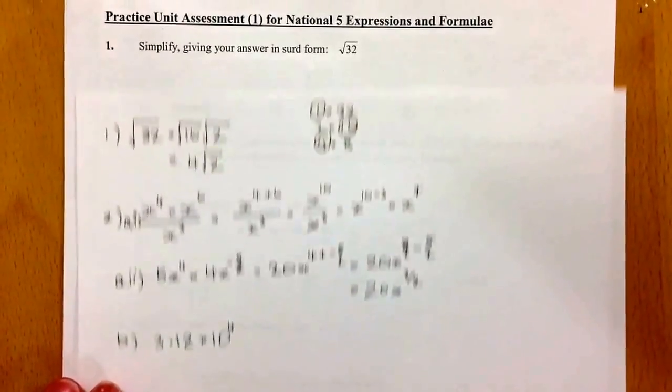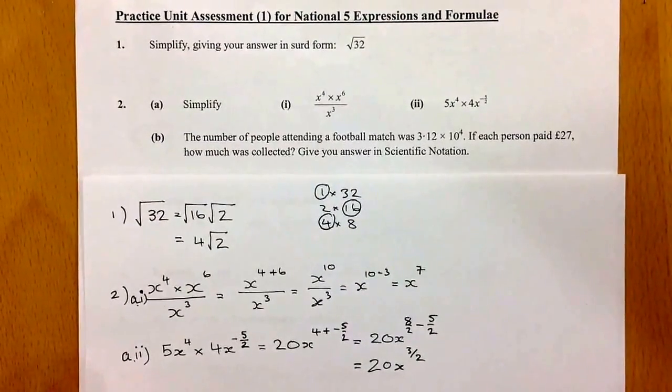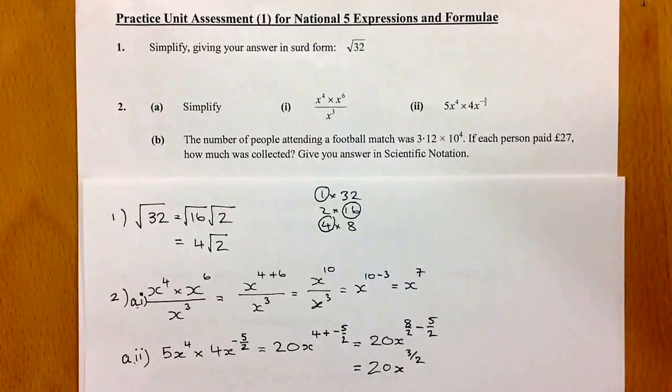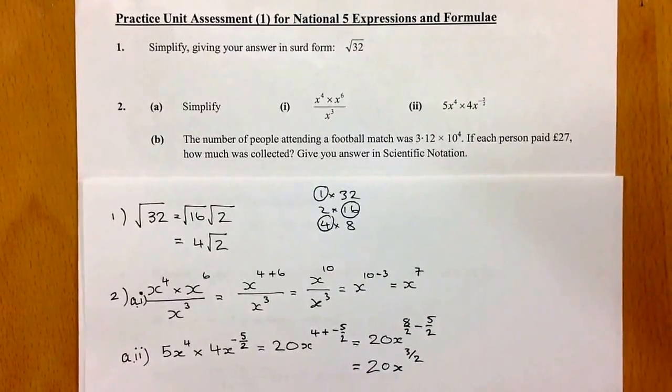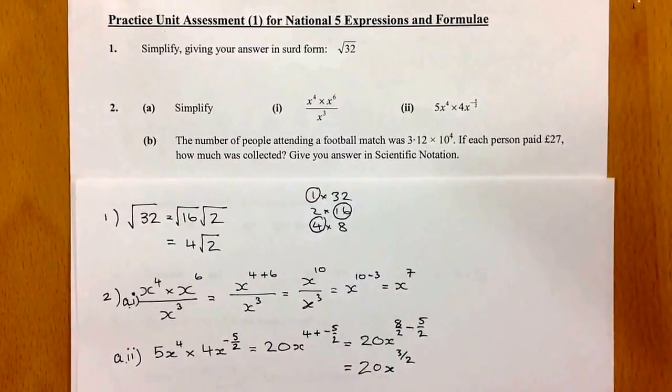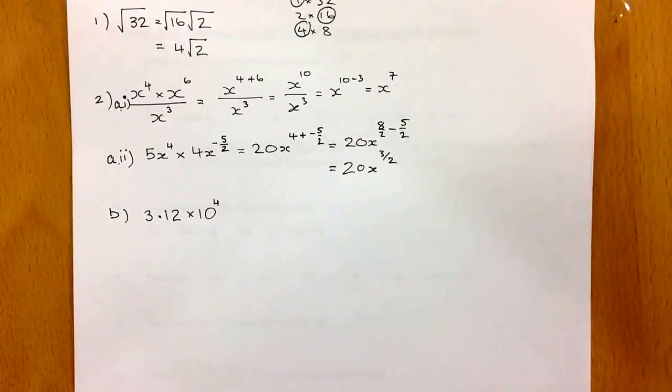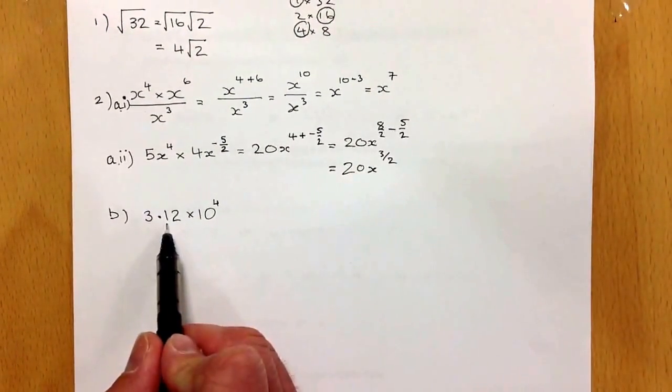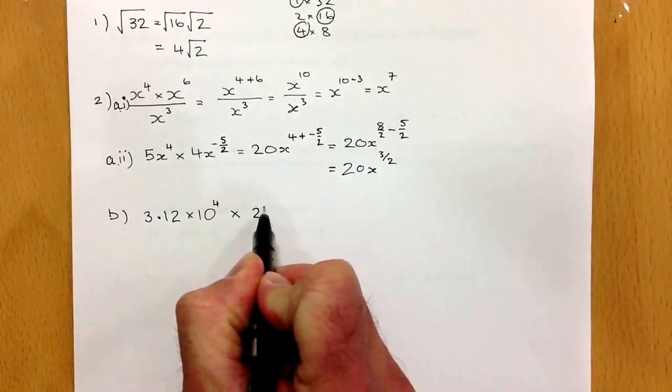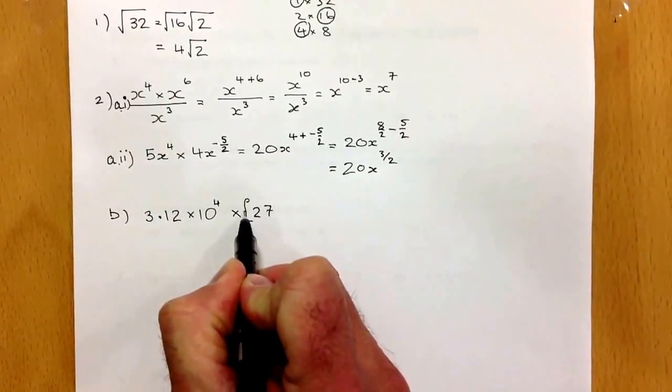With question 2 part b, we have a question that asks: the number of people attending a football match was 3.12 times 10 to the power of 4. If each person paid 27 pounds, how much was collected? Finally, we give our answer in scientific notation. So I'm going to start with the number of people and multiply that by the 27 pounds.